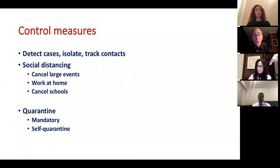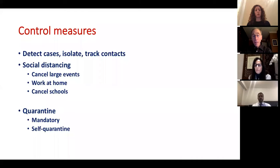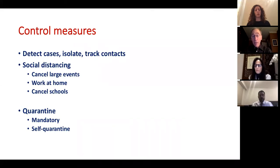Our control measures, in the absence of confirmed therapies and a vaccine, are mainly behavioral. We must detect cases, isolate them as quickly as possible, determine who they exposed, and get those people into self-quarantine. We also must carry out social distancing — people need to stay apart from one another as much as possible, ideally staying at home and not seeing anyone outside the home. We cancel large events because any large event can serve as a terrible amplification point for this virus.